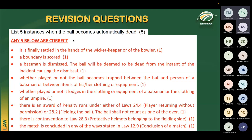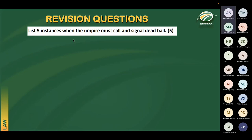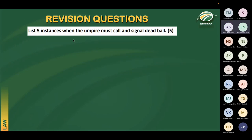Now for instances where the umpire needs to call and signal dead ball. We need five volunteers. Suhail: intervening in the case of unfair play — very good. Simon: when the umpire leaves his normal position to go for consultation — fantastic. For example, if there's a catch to second slip and the bowler's follow-through blocked your view, before consulting your partner you call and signal dead ball and ask for the ball back.